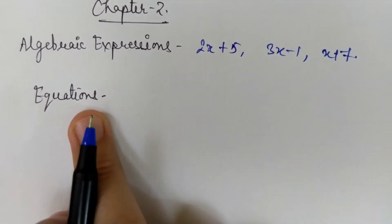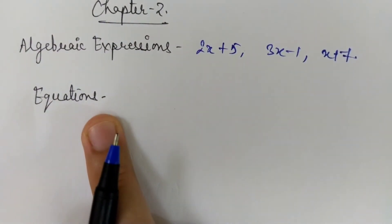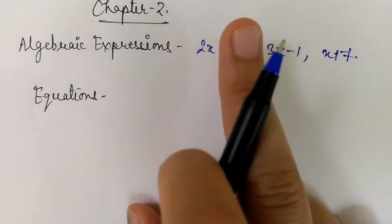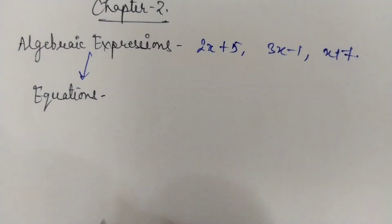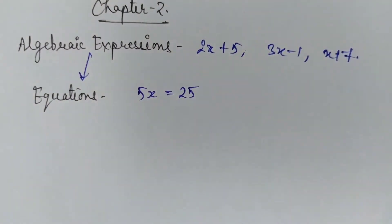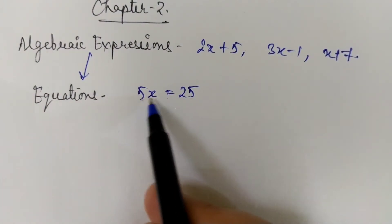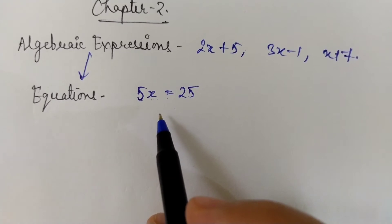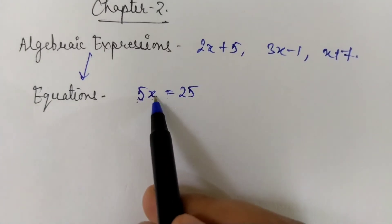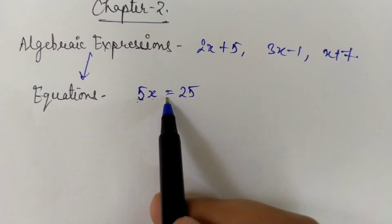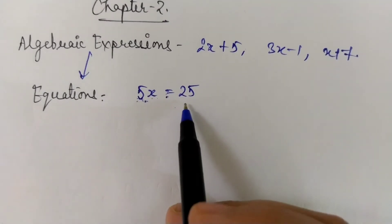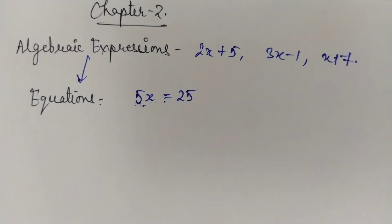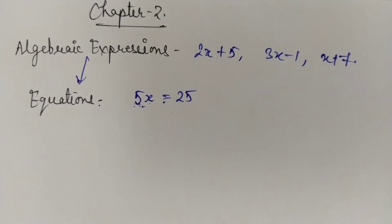Now, equations: when these algebraic expressions are written with an equality sign — an equals to sign — they get converted into equations. For example, if you write the algebraic expression as 5x equals 25, then by writing it with the equality sign, this algebraic expression is converted into an equation. These are the basic things you have learnt from previous classes — algebraic expressions and equations — which you are going to build on further.